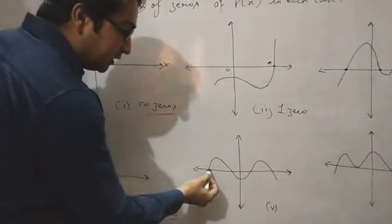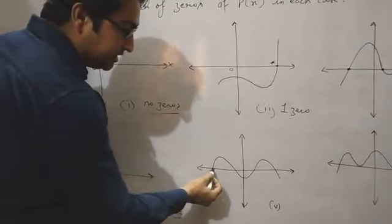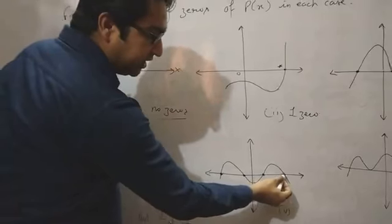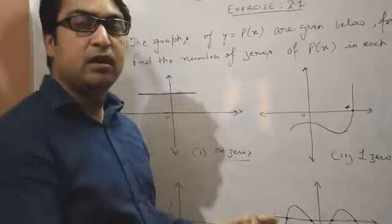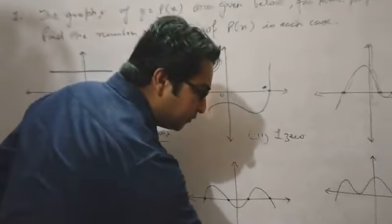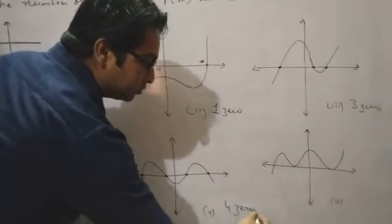Here the curve intersects the x-axis at one, two, three, and four points. So there will be four zeros of this graphical representation, four zeros.